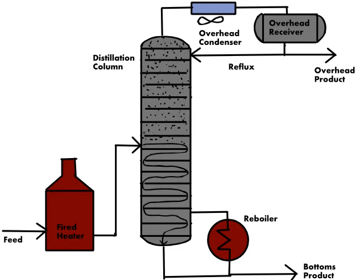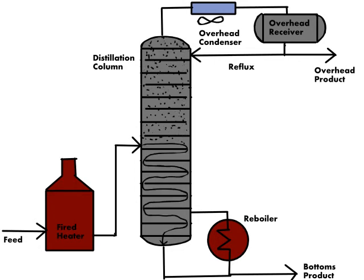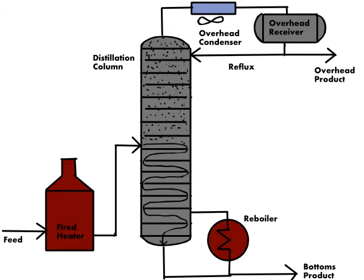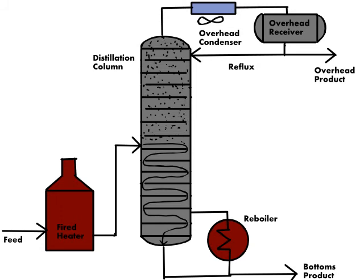Distillation columns are reboiled to provide additional heat to support separation. A condenser at the top of the column cools separated light overhead products and returns them to the top of the column as reflux. Therefore, the top of the distillation column is cooler than the bottom of the distillation column. Refiners refer to this as the column's temperature profile.